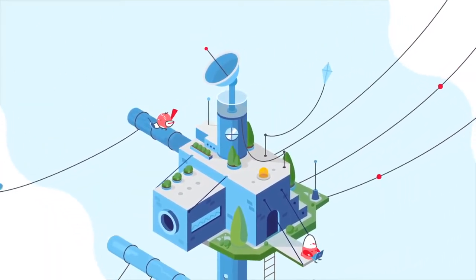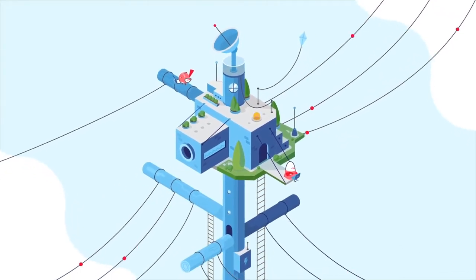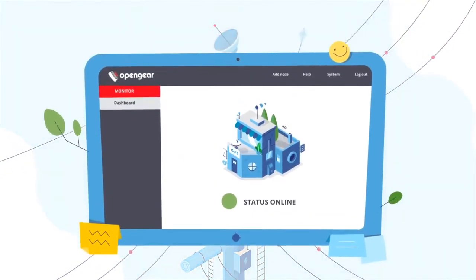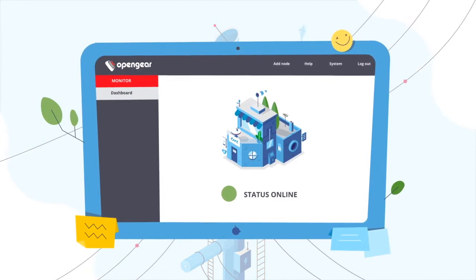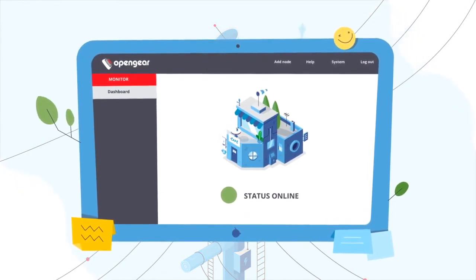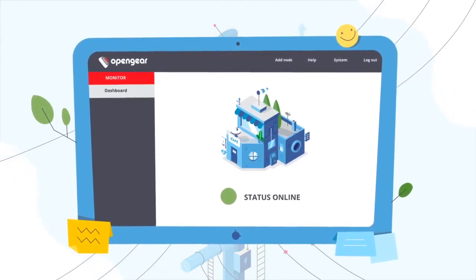It doesn't matter if your team has to manage five or 500 locations. OpenGear's centralized management software, Lighthouse, provides flexibility, searchability, and accessibility to your network equipment through a single pane of glass.